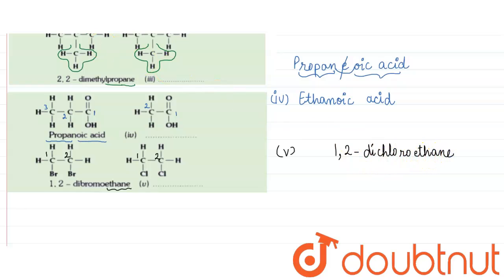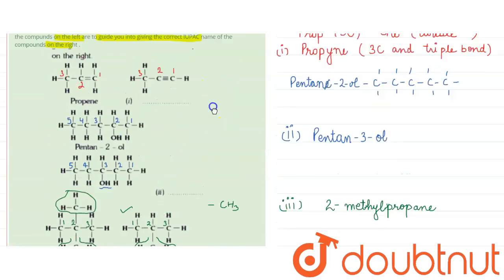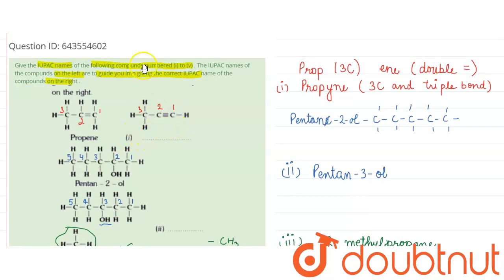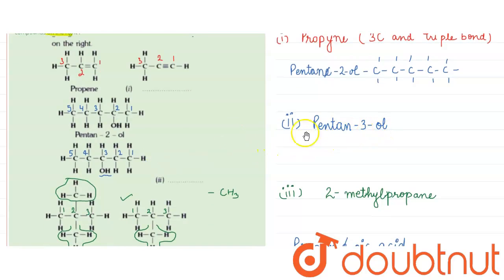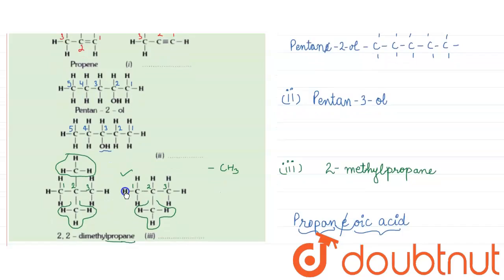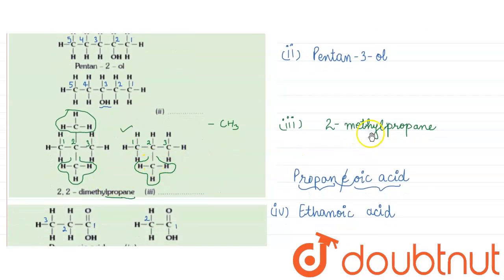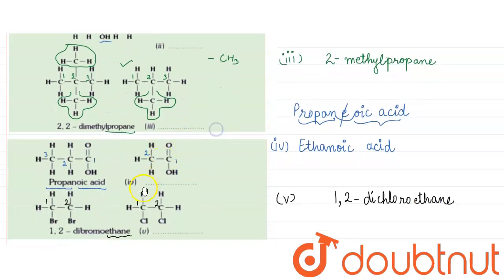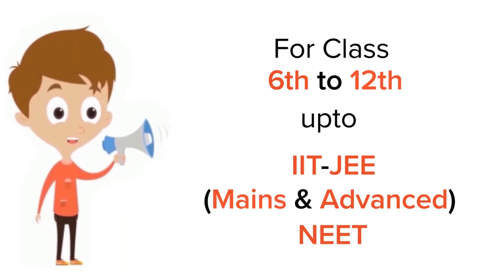To summarize all five answers: the first compound is propyne, due to the triple bond. The second is pentan-3-ol, due to the third-position alcohol group. The third is 2-methylpropane. The fourth is ethanoic acid, for two carbons with a carboxylic acid group. The fifth is 1,2-dichloroethane. I hope this was clear. Thank you.